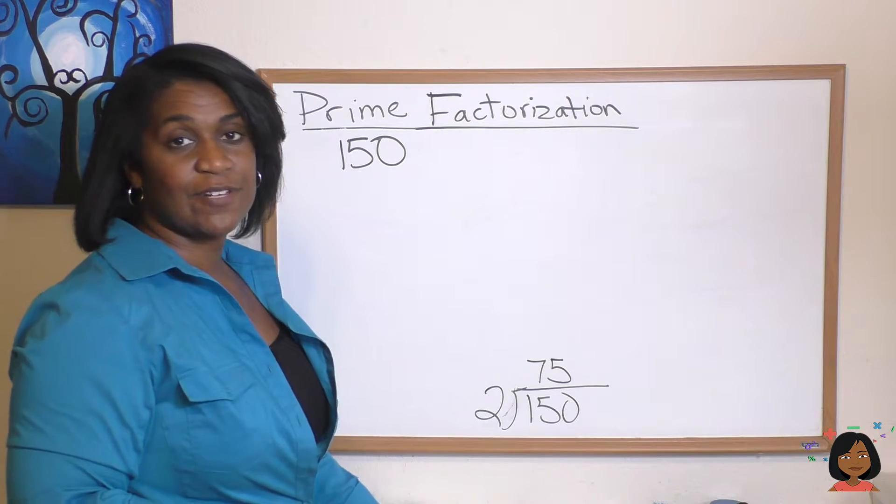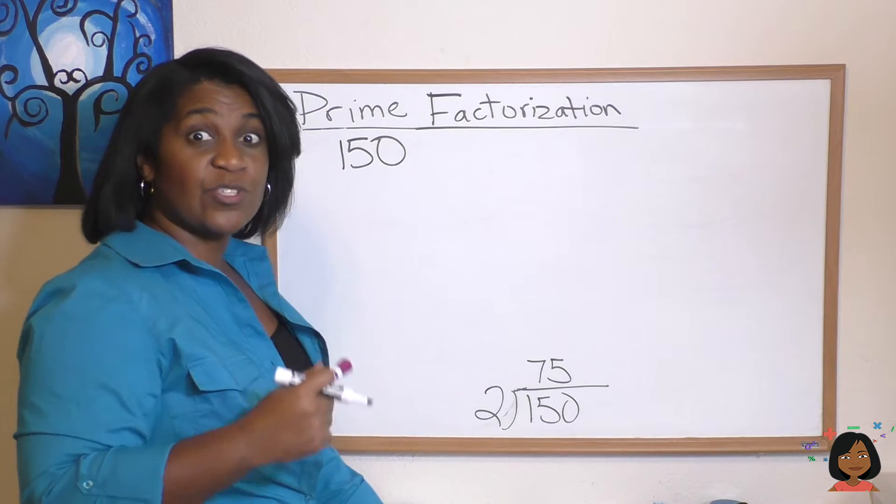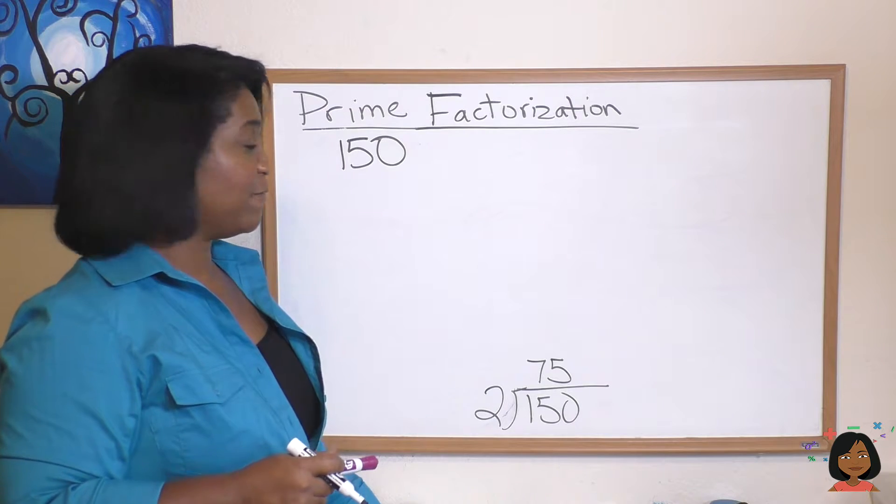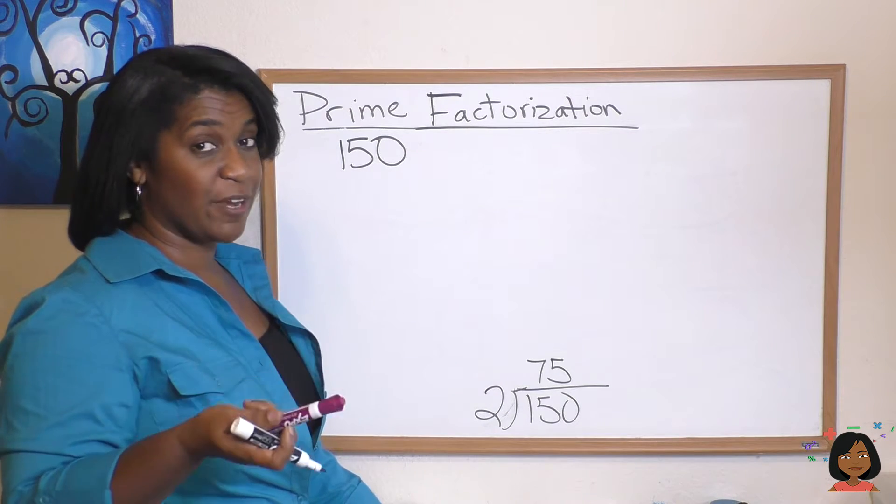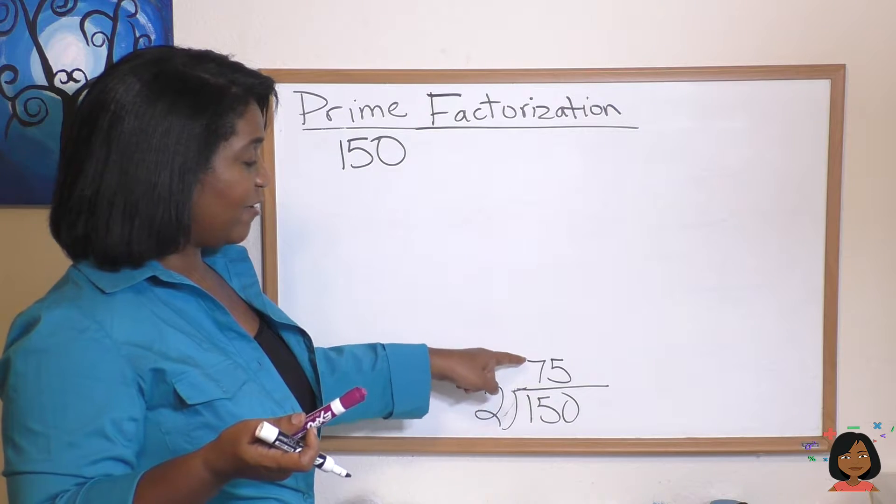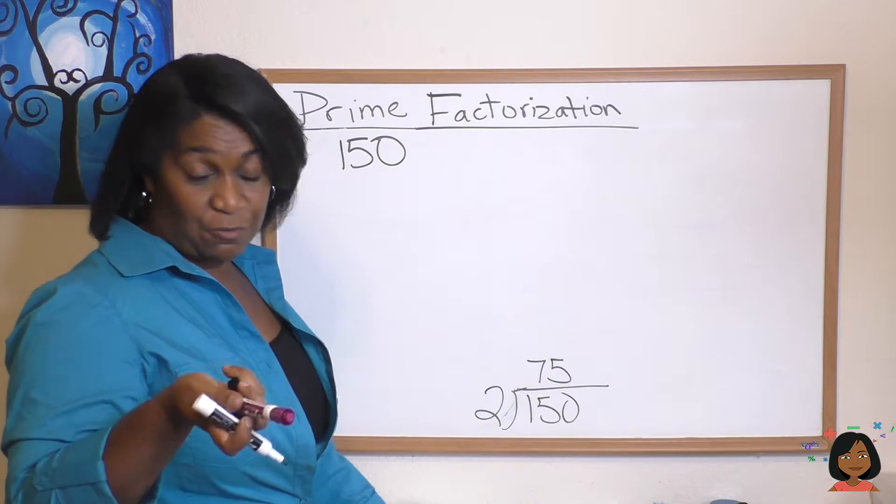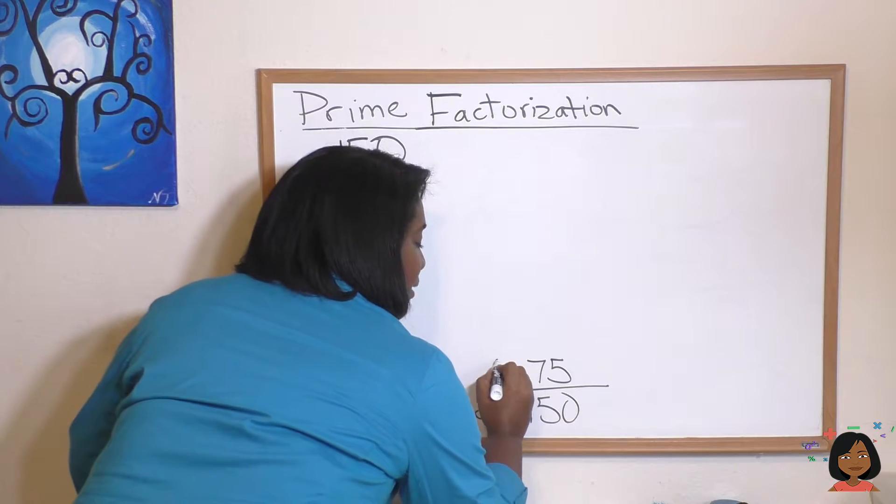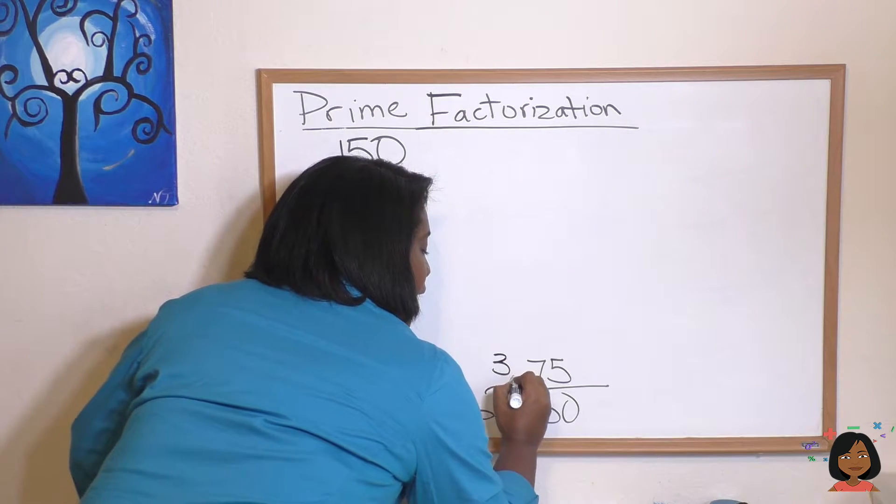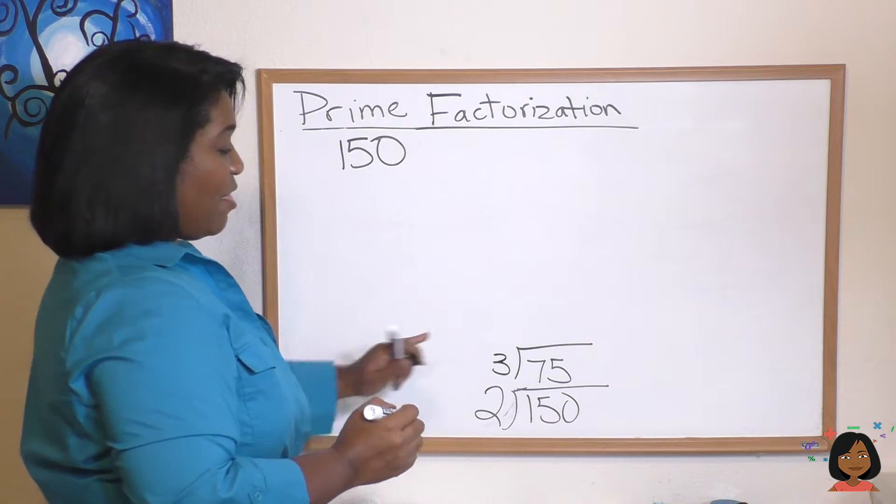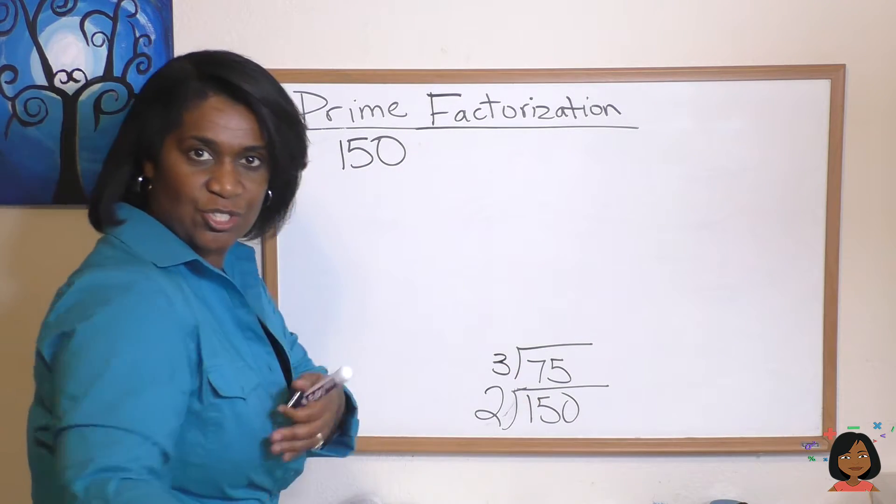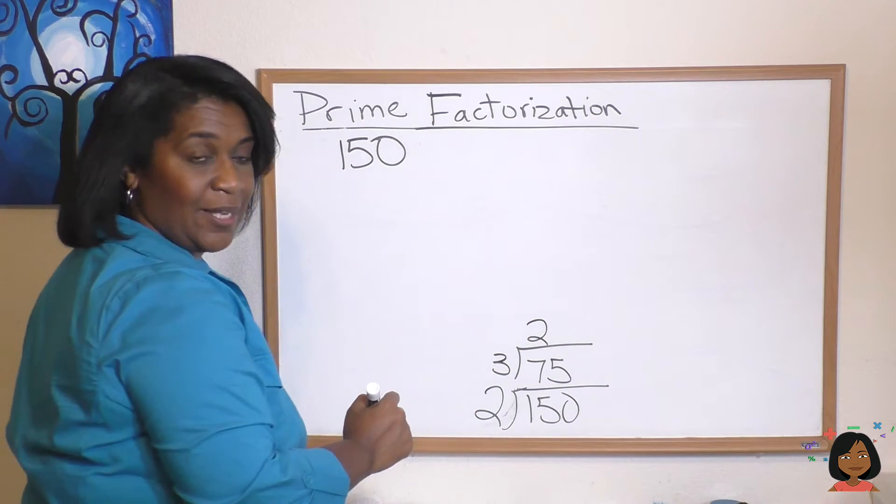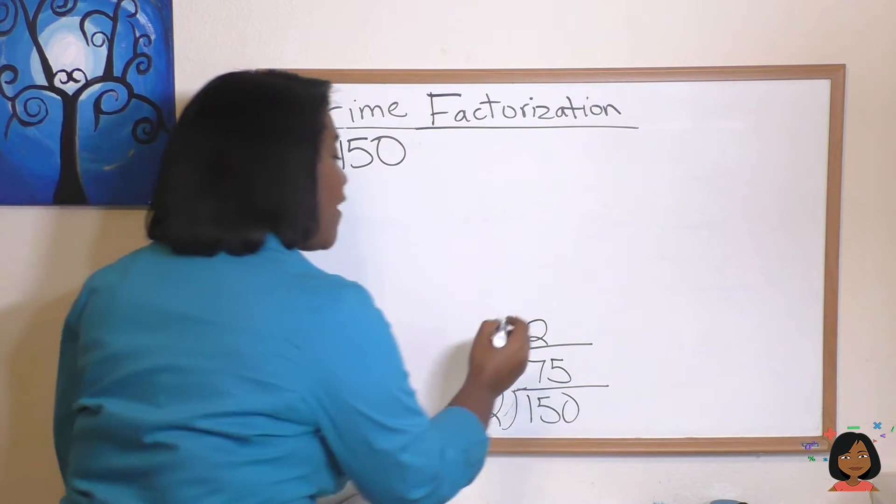Does 2 go into 75? No, it does not. Now I go to the next prime number, which is 3. And I see, does 3 go into 75? Remember that a divisibility test for 3 is you add the digits together. 7 and 5 is 12. That means 3 can go into 12. So 3 can go into 75. So I'm going to do it again. I'm going to put my 3 here. And there's my division bar again. 3 into 75. Let's do the mental math. 3 goes into 7 two times with one left over. 3 goes into 15 five times.